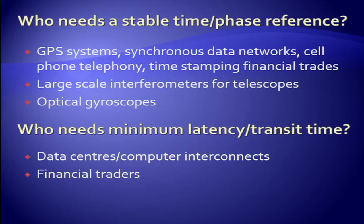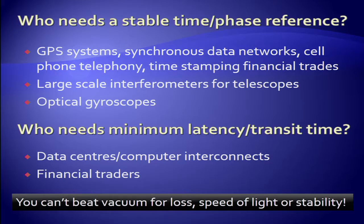You can't beat vacuum for loss, speed, or stability. Even the GPS guys worry about the instability of the ionosphere and have to correct for it, which surprised me. But in a fiber you've got an even bigger problem — it varies much more with temperature.